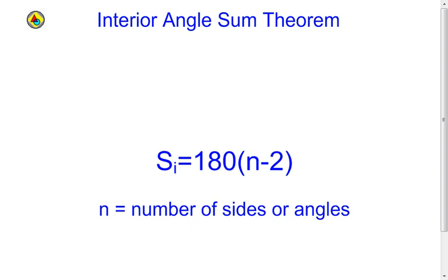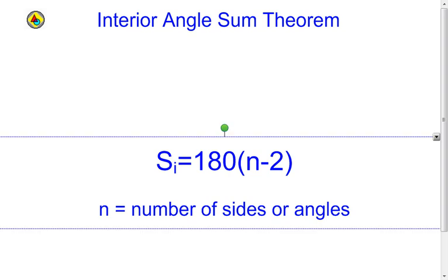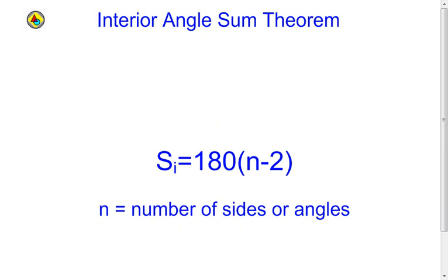Now remember, thinking back to the computer lab, that n-2 part represented the number of triangles we created in the polygon. Each triangle, when we look at the three angles and add them up, equals 180. So if we take 180 times the number of triangles, we get the sum of the measures of the interior angles of our polygon. Simple little formula right there.